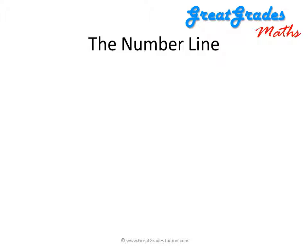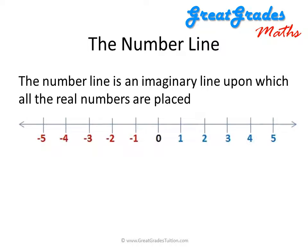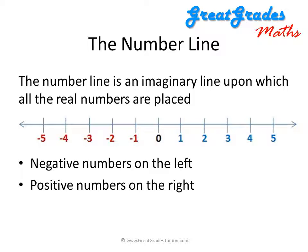So, let's look at the number line. What exactly is the number line? Well, the number line is an imaginary line upon which all of the real numbers are placed. Here is a depiction of a small part of the number line, and notice that there are three different parts to it. First of all, the negative numbers are on the left-hand side, depicted in red. Then we have the positive numbers on the right-hand side, depicted in blue. And we have zero in the middle.